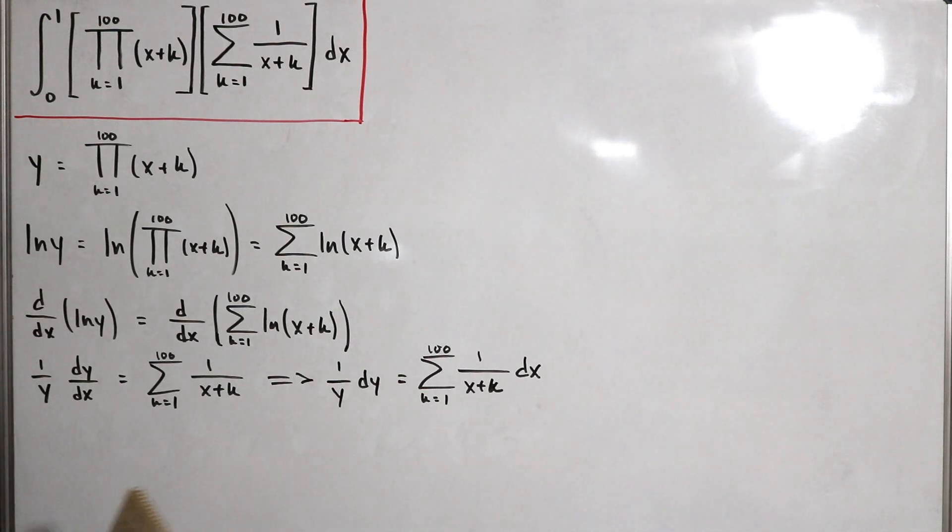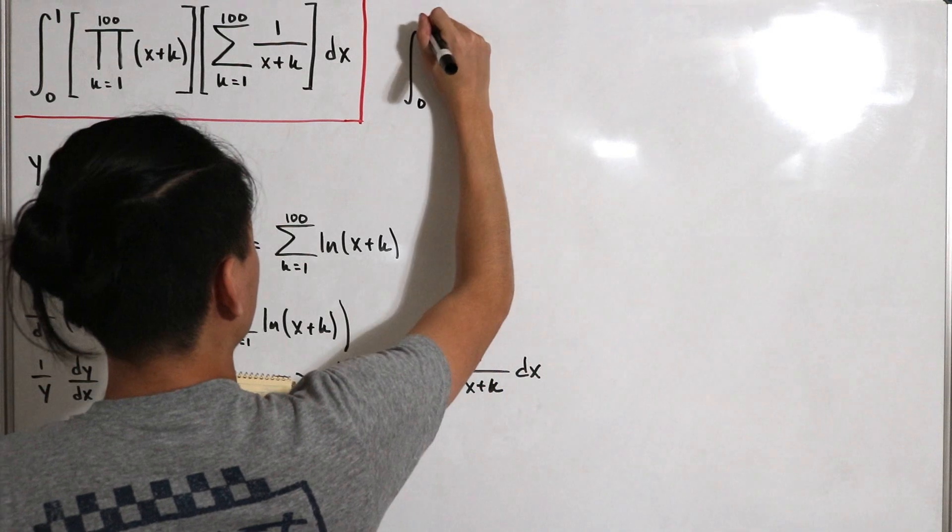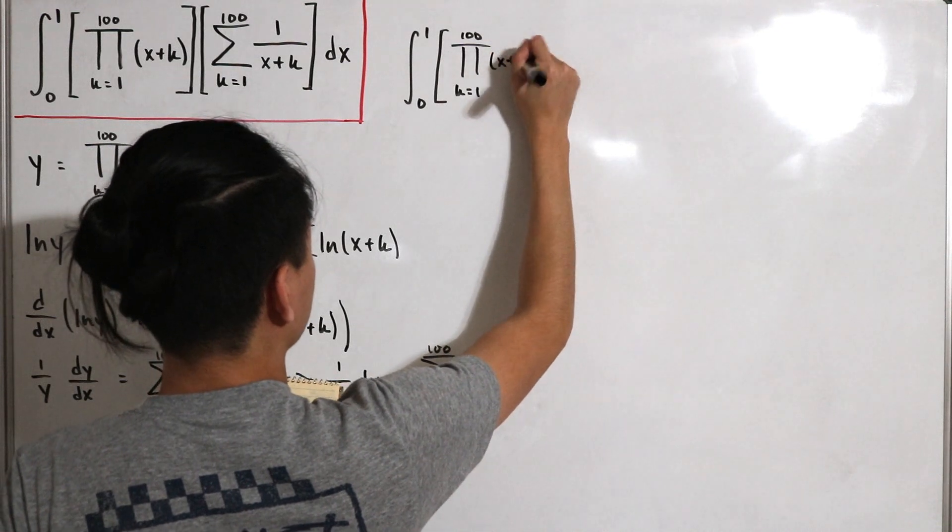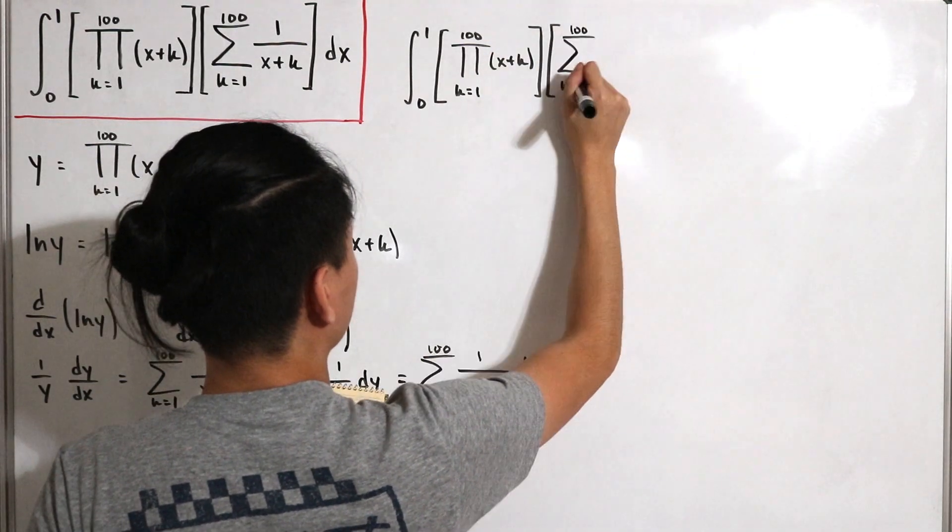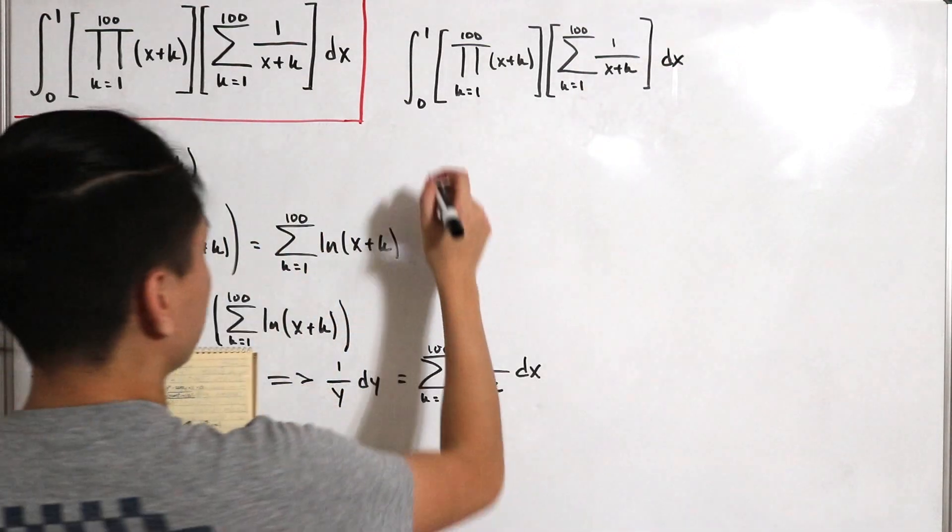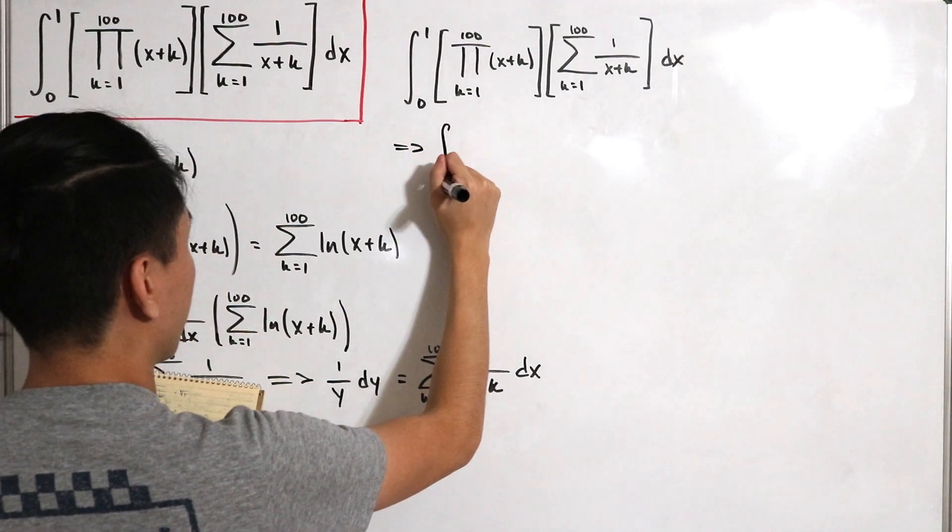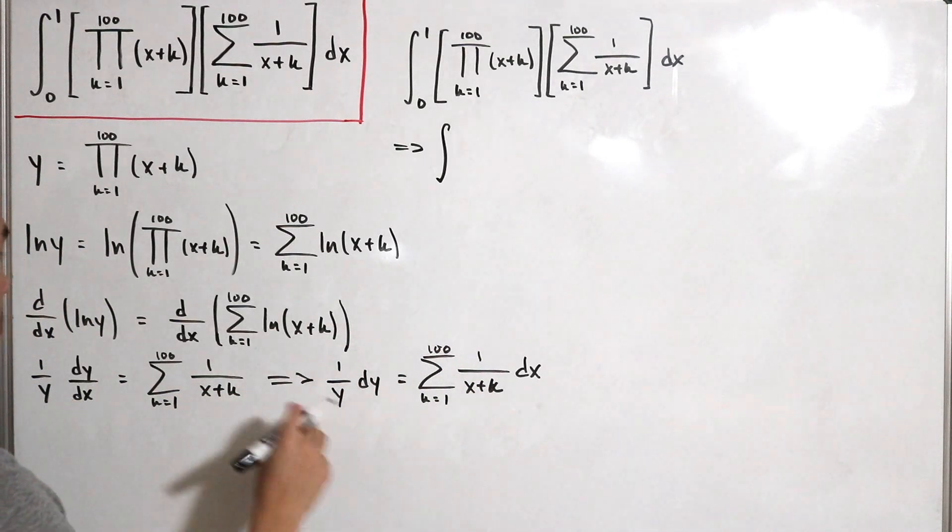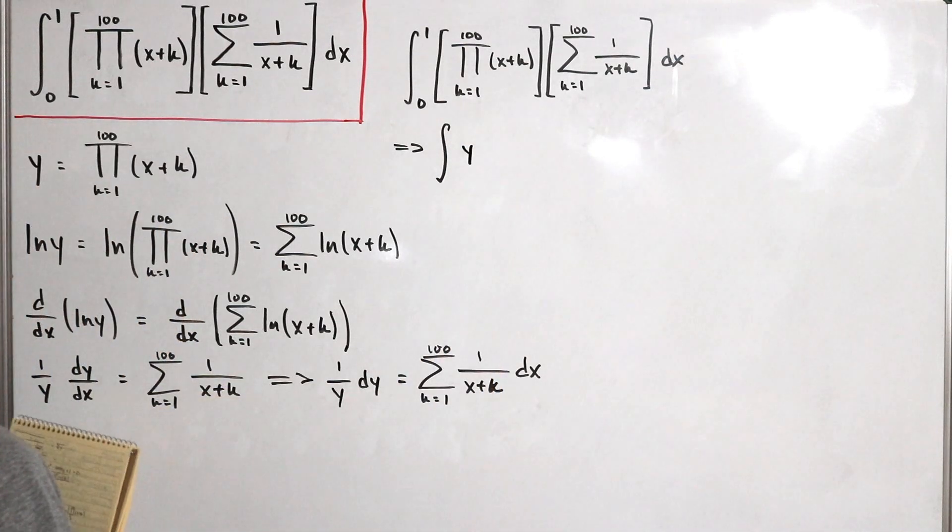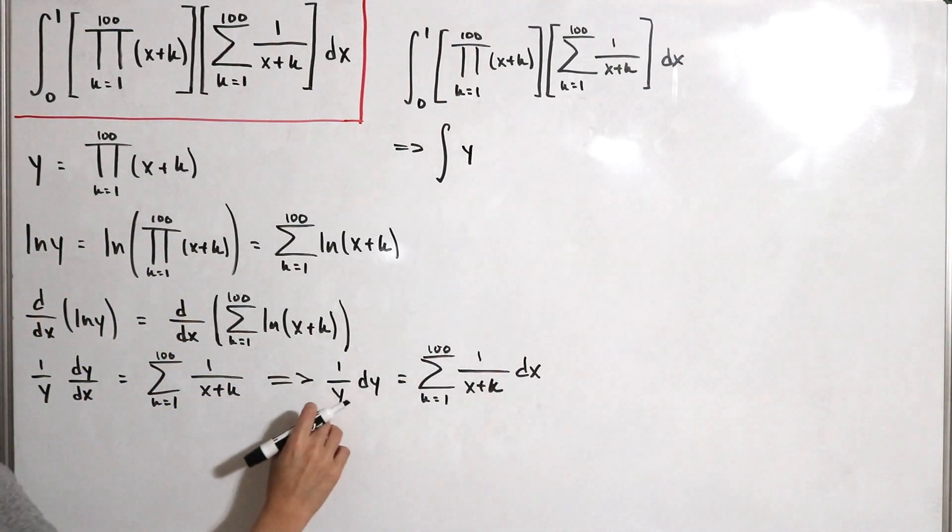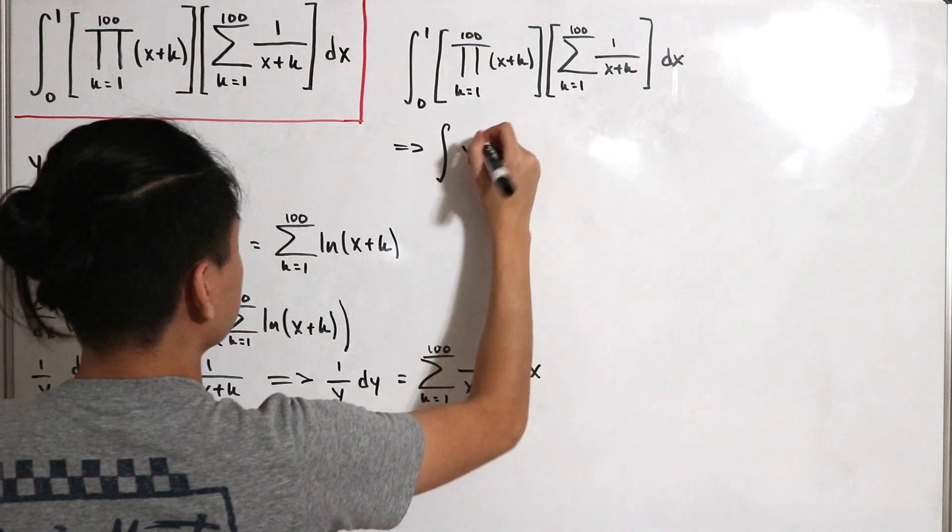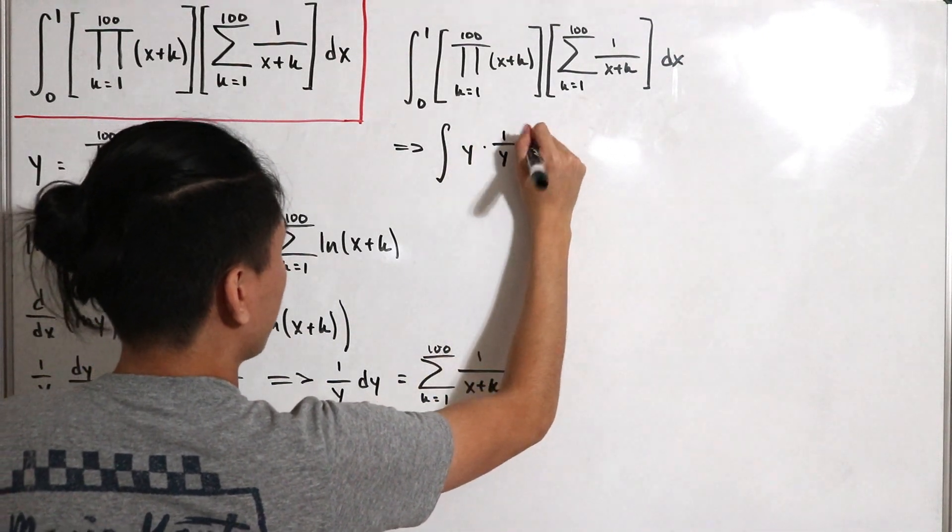Let's perform the substitution. We have the integral from 0 to 1 of the partial product from k equals 1 to 100 of x plus k, multiplied by the partial sum from k equals 1 to 100 of 1 divided by x plus k, dx. When we perform the substitution, we set y equal to the partial product, and we just did the substitution for 1 over y dy, so this becomes the integral of y times 1 over y dy.